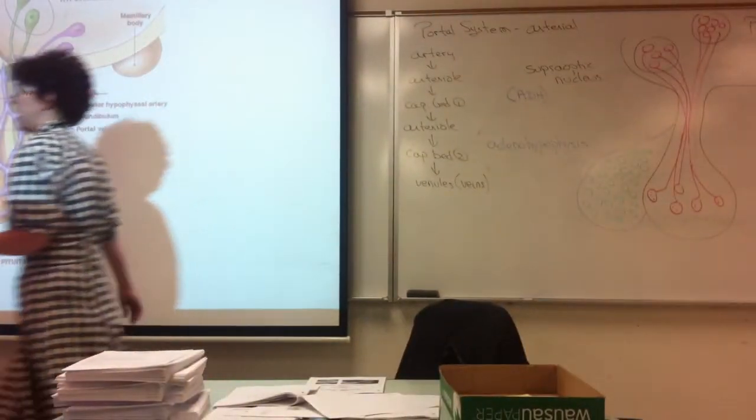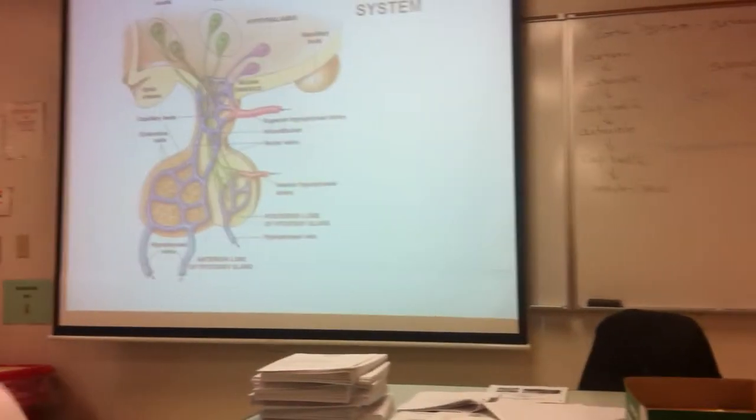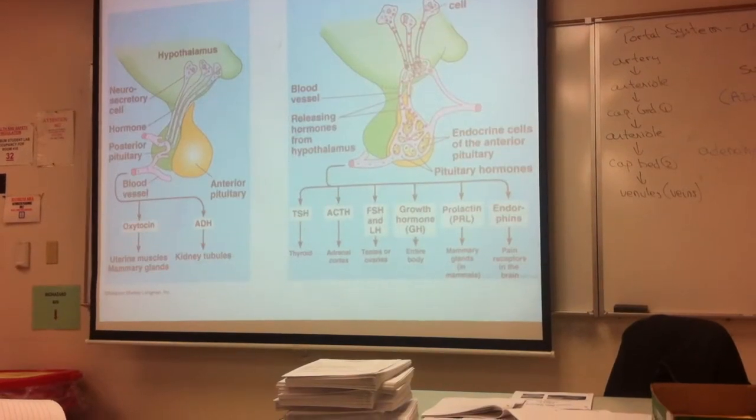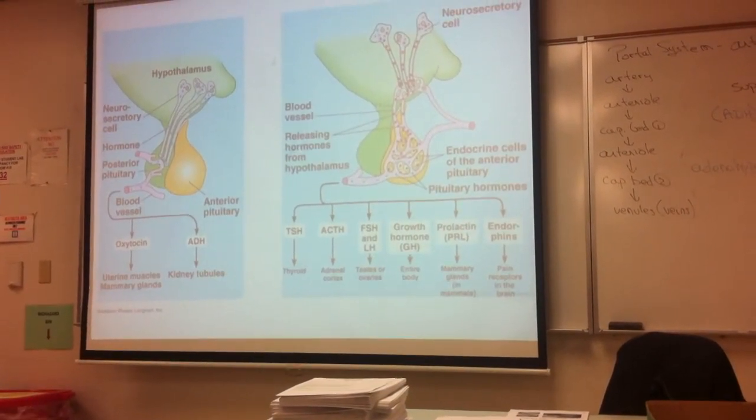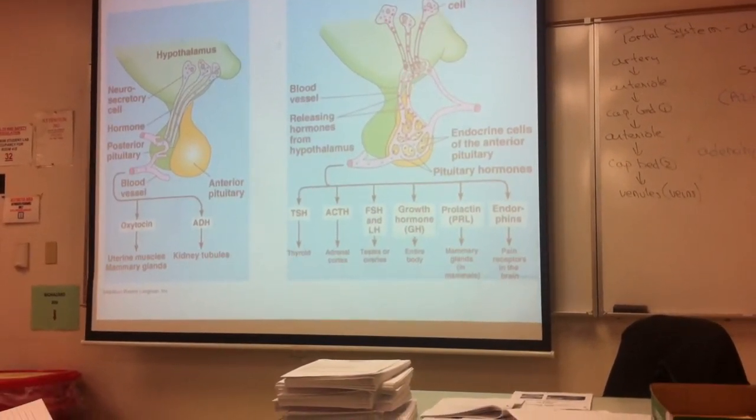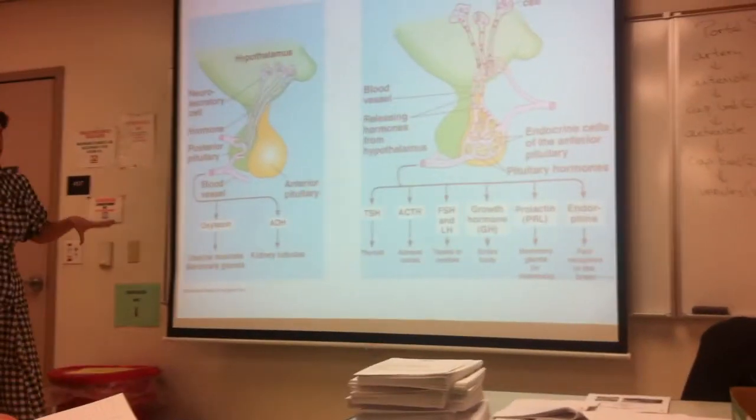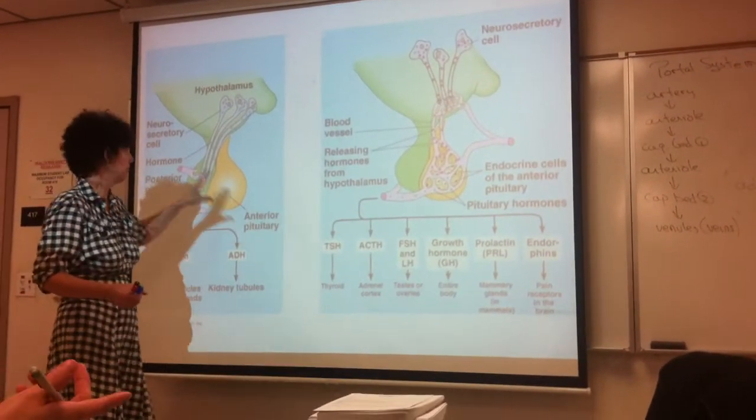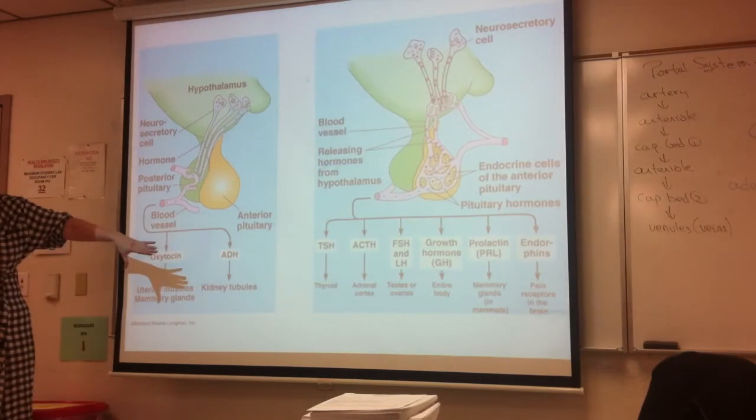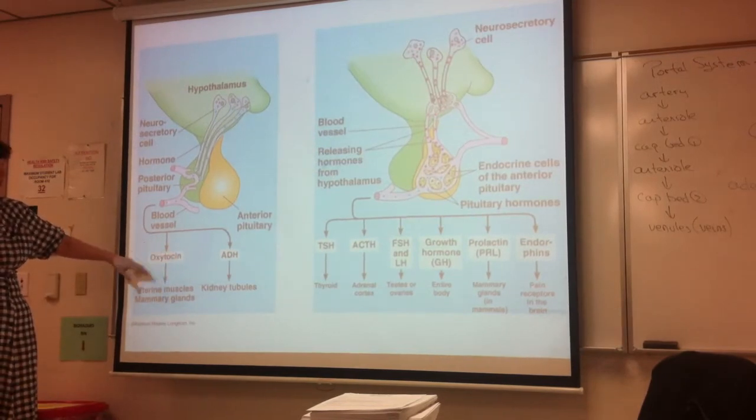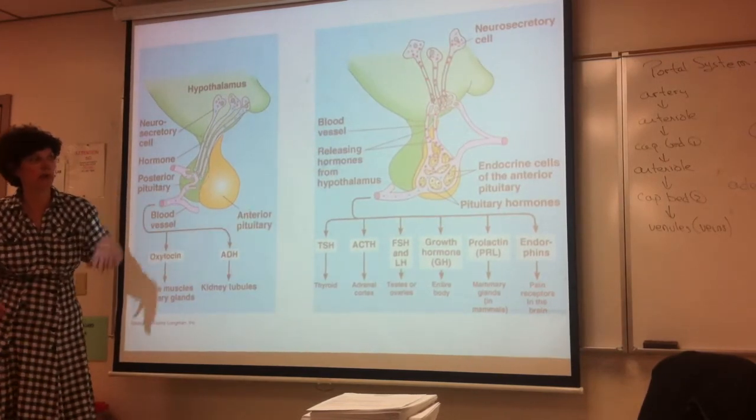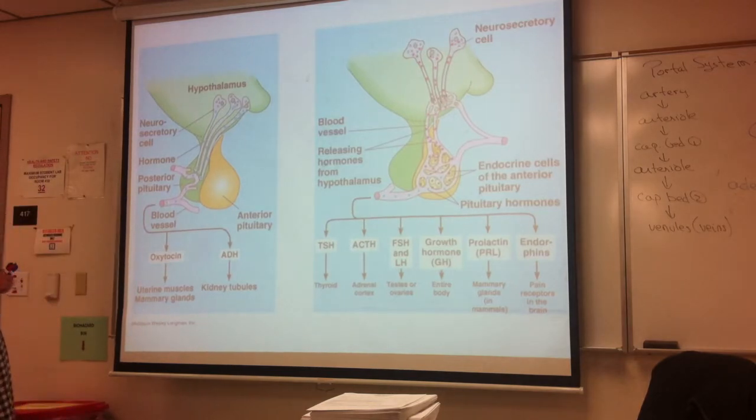Function of the hypothalamus and thalamus. We're going to be adding releasing factors to our image here. These are the hormones made by the posterior pituitary: oxytocin and ADH.